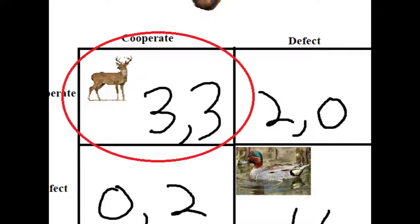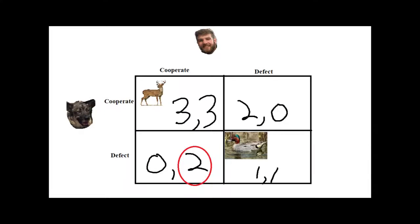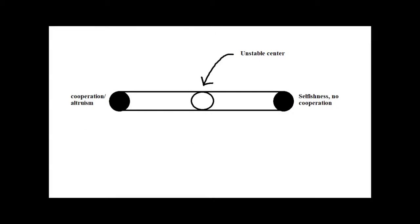However, in a population where some individuals decide to be selfish, then it becomes more beneficial to also act selfishly. This creates a population with an unstable center that leads to cooperation if altruists know to mate with one another. But it can lead to selfishness if enough individuals fail to cooperate.